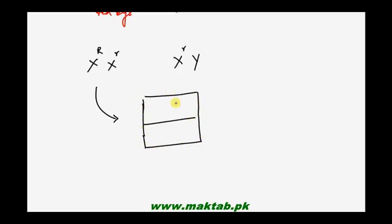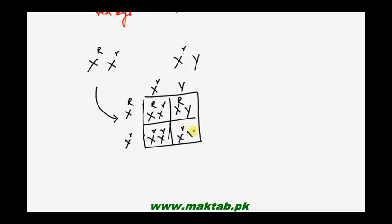In the test cross, we use a Punnett square. The heterozygous female produces gametes X capital R and X small r. The white-eye male produces gametes X small r and Y. The combinations give: X capital R X small r, X small r X small r, X capital R Y, and X small r Y. The first three genotypes result in red-eye offspring.